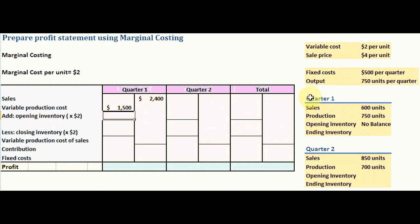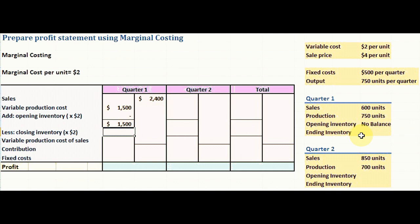We need to add the opening inventory, but we were told there is no opening inventory balance for quarter one, so we leave it as null. Next, we need to calculate the closing inventory for quarter one.